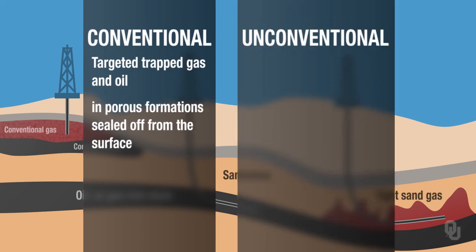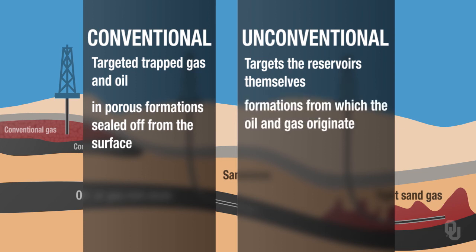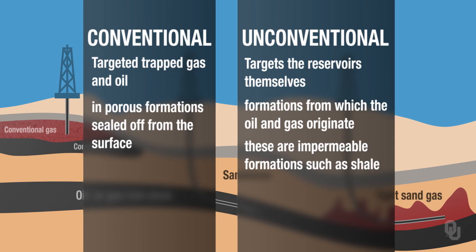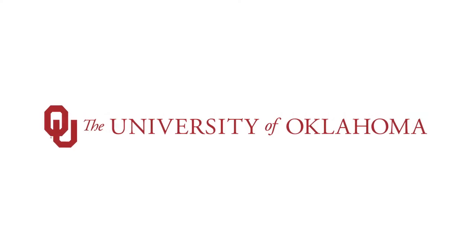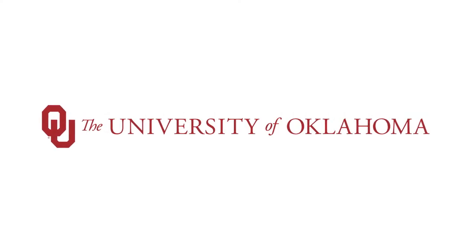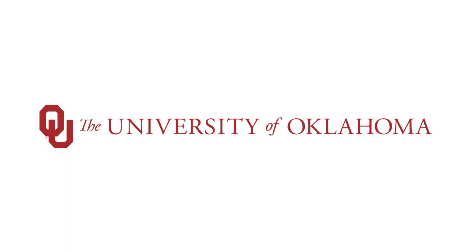Unconventional production targets the reservoirs themselves — that is, the formations from which the oil and gas originates. These are impermeable formations. So let's take a look at the...